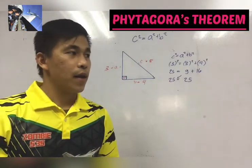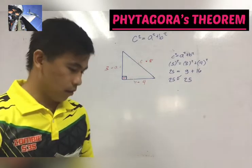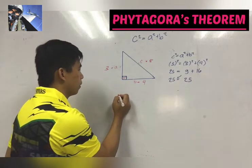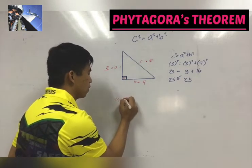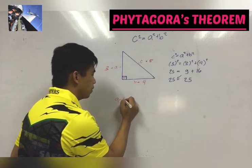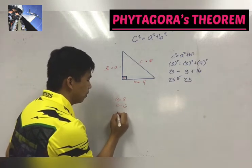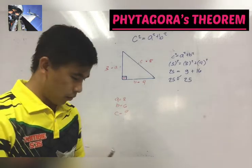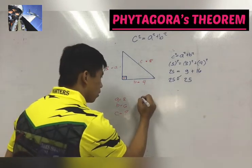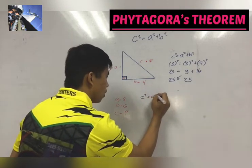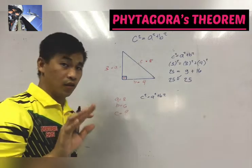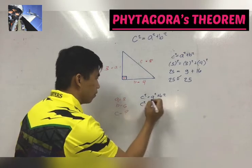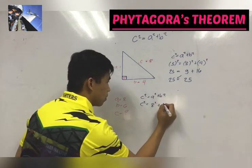Now what if a certain problem is looking for the hypotenuse of a right triangle? So let's take for example, we have A as 8, B as 6, then we have to find C or the hypotenuse. So by substitution, C² = A² + B², provided that it is a right triangle. So to find C, we have 8² + 6².